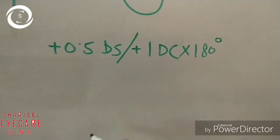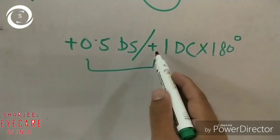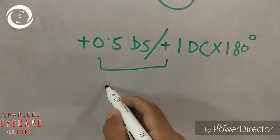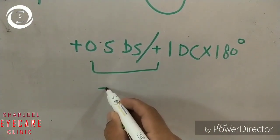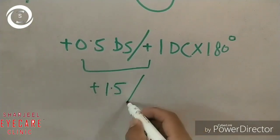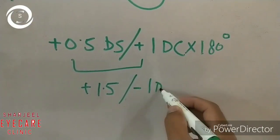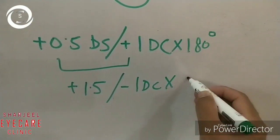Now how do we do transposition? We have to add the cylinder and sphere. Plus 1 and plus 0.5 becomes plus 1.5 diopter sphere. Change the sign of the cylinder: minus 1 diopter cylinder, and change the axis as well.